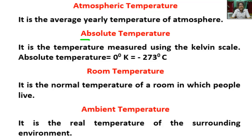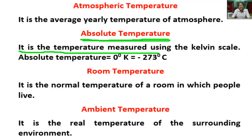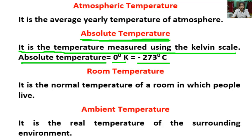What is absolute temperature? It is the temperature measured using the Kelvin scale. Absolute temperature equal to zero degrees Kelvin means minus 270 degrees centigrade. Zero degrees Kelvin is called absolute temperature.